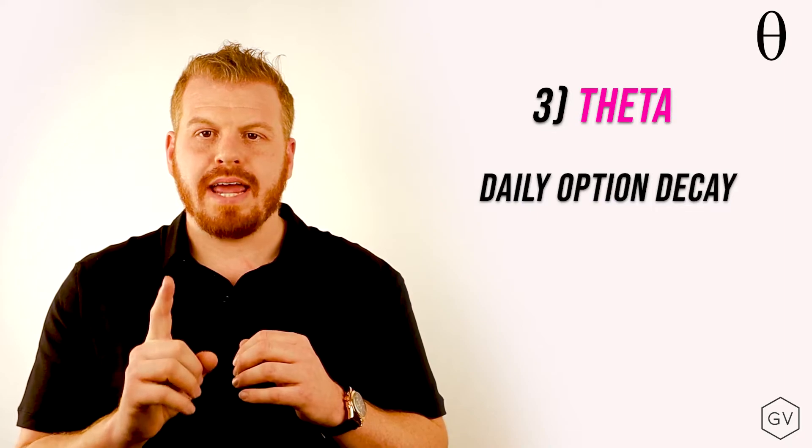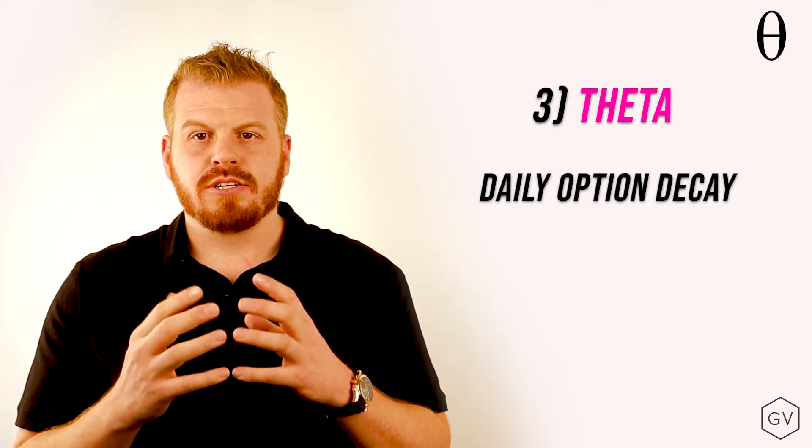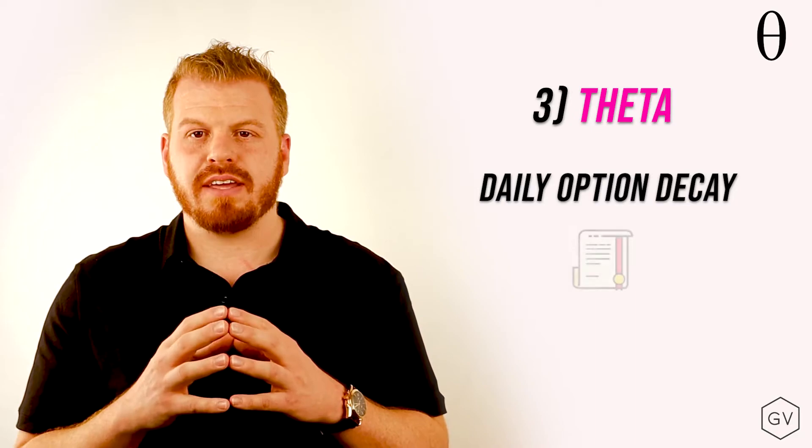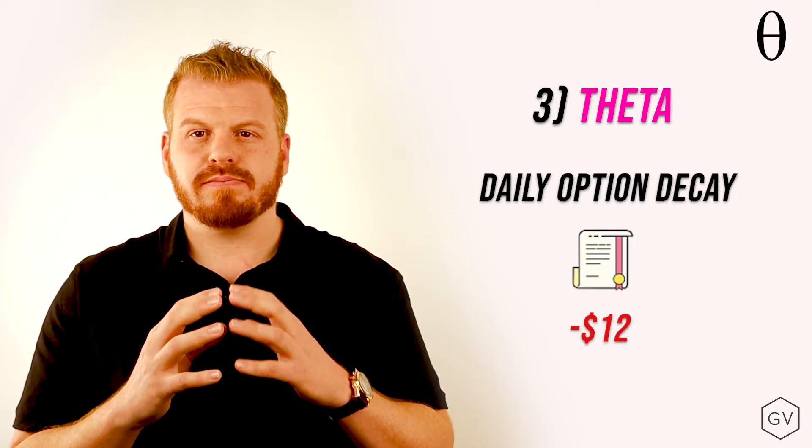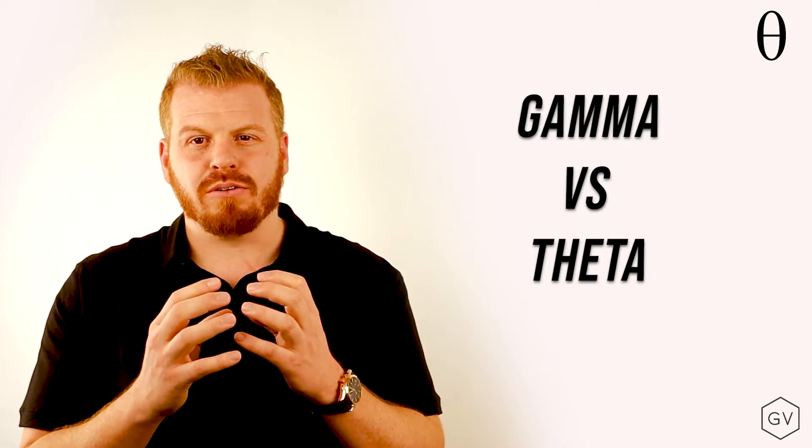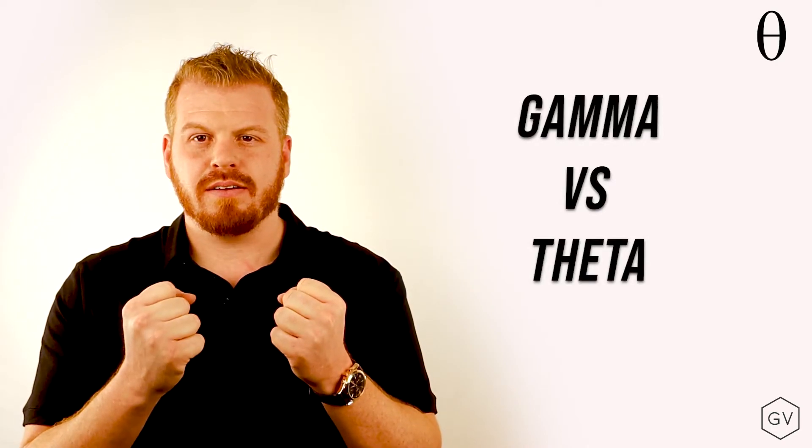The third Greek is called theta. Theta represents the decay in option value for one day passage of time. So if you have a position with a negative 12 theta, that means the next day that goes by, holding everything else constant, your option will decay by 12 dollars. While option buyers get the benefit of gamma, option sellers get the benefit of theta. A lot of option positioning and option trading is a battle between gamma and theta. But we'll talk about this in gamma scalping in later videos.